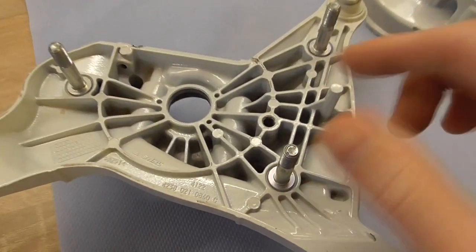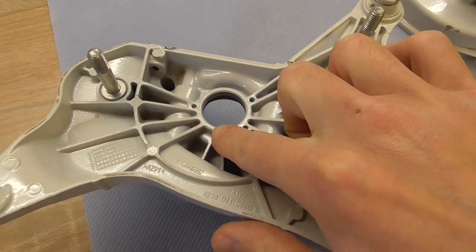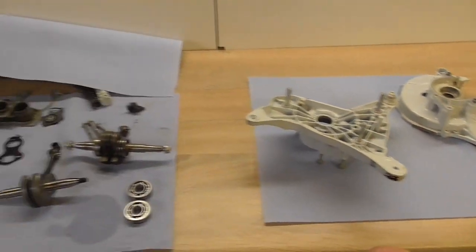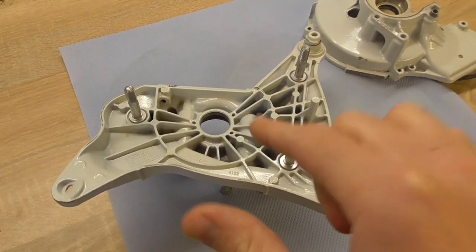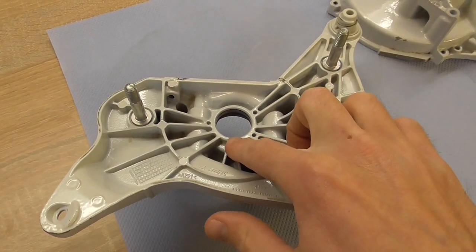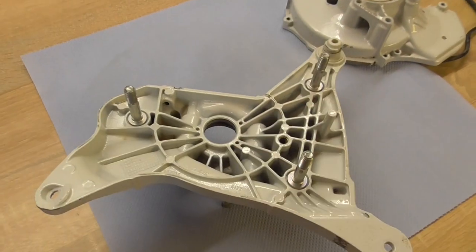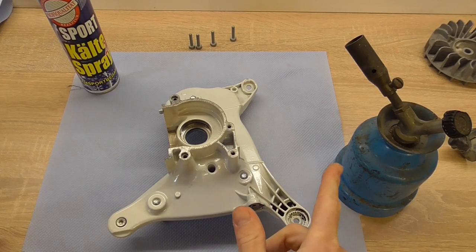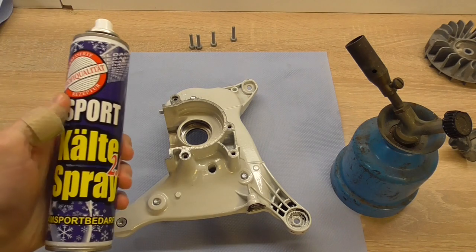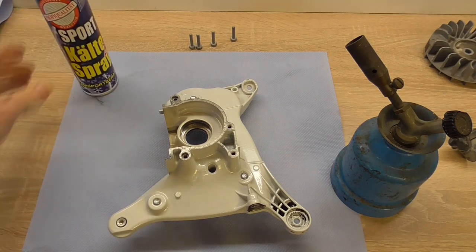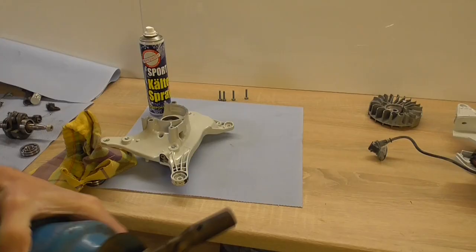Later on, when everything is in, we'll put in the shaft seals because I will heat up the stuff to get the bearings in and I don't want to destroy shaft seals. We can mount them later on. Now we'll heat up the case with fire, cool down the bearing and then hopefully it just falls in. So let's start!